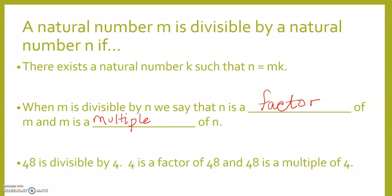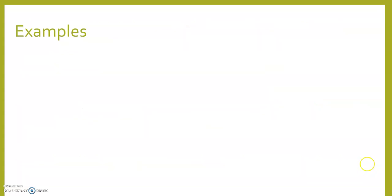48 is divisible by 4. 4 is a factor of 48 and 48 is a multiple of 4. Example: 12 is divisible by 3 because 3 times 4 equals 12.